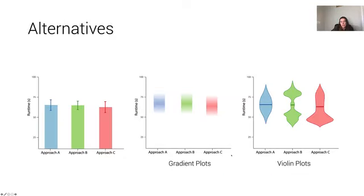This is why, as an alternative to bar charts and error bars, we have a lot of different approaches that give us more information about the distribution of values while also avoiding this within-the-bar bias. For example, in the middle here, we have gradient plots.